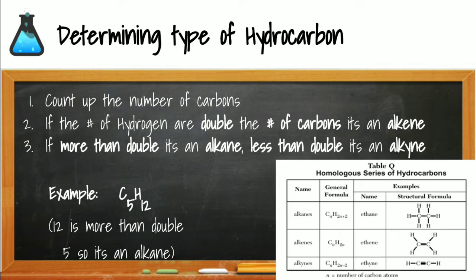Looking at C5H12: five carbons means the prefix is pent, and 12 is 2 times 5 plus 2, so this is an alkane. This compound is called pentane.